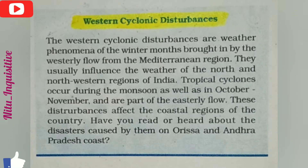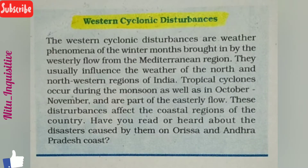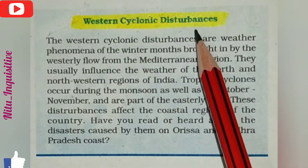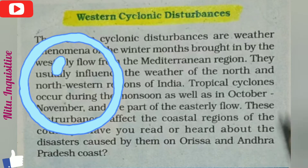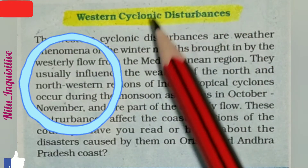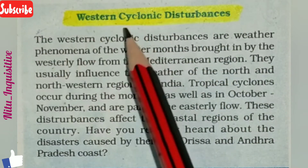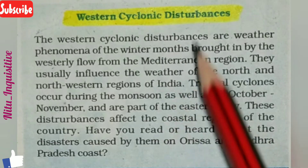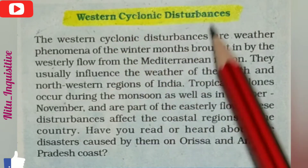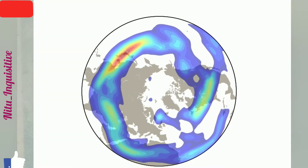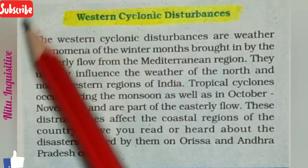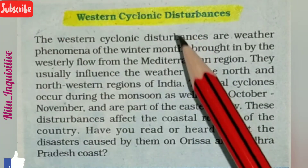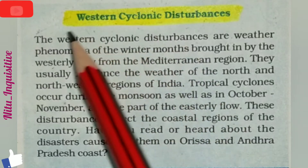Welcome back. In this video, I'm going to discuss one very important topic — Western Cyclonic Disturbance. First, we'll try to find out why this cyclonic disturbance is known as 'western' cyclonic disturbance. This cyclonic disturbance, or general circulation of the wind system, is coming from the west direction — that is why we call it Western Cyclonic Disturbance.